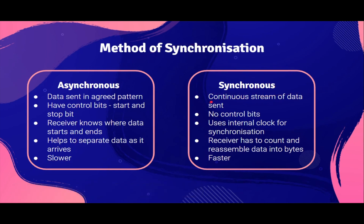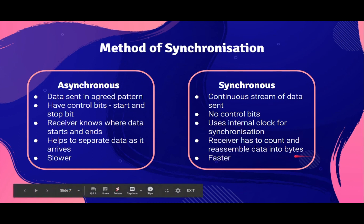Next, we have synchronous. Synchronous means a continuous stream of data is sent. There are no control bits, which means it uses something else for synchronization. Synchronous uses an internal clock with timing signals to synchronize between the sender and the receiver. The receiver has to count and reassemble the data into bytes because they don't know where the data starts and stops. But this is faster.